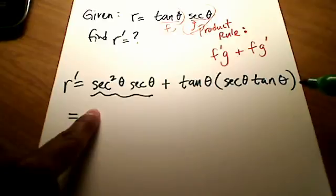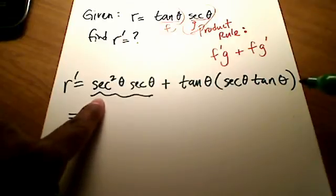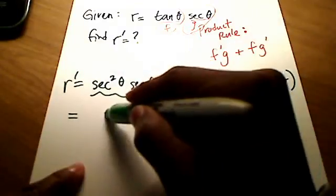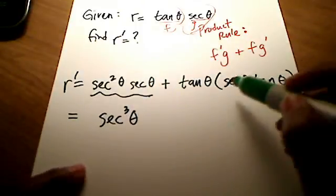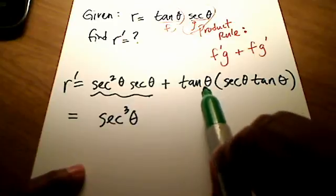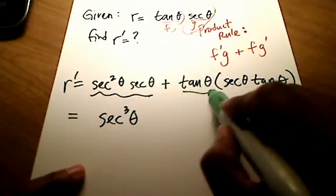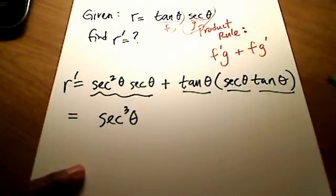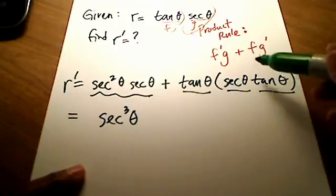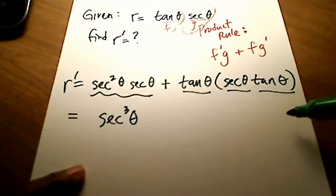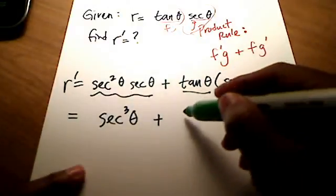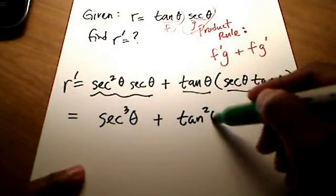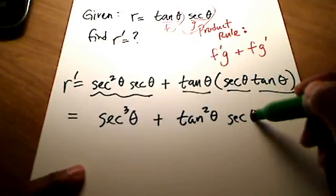You can see that for this first term, I've got three secants — secant squared times secant — so I really have secant cubed theta. And over here, this is not distributive property; it's just this stuff times this stuff times this stuff, with no addition or subtraction going on. So over here I've got two tangents, or tangent squared, and a secant theta.